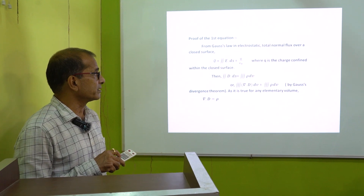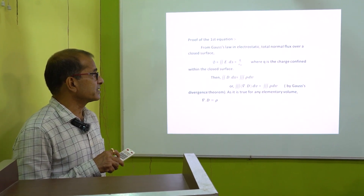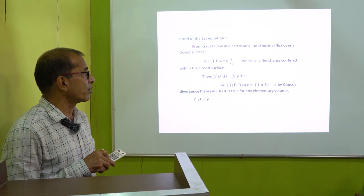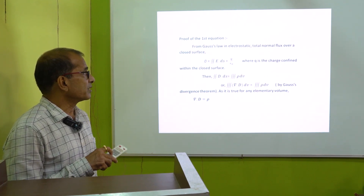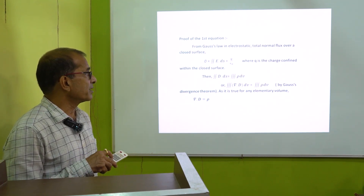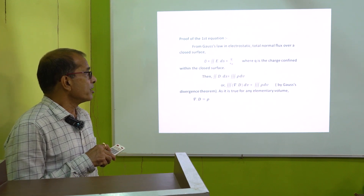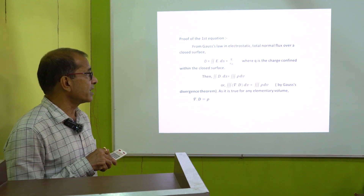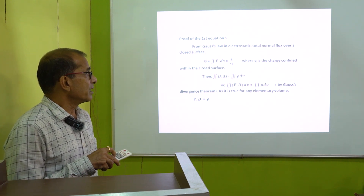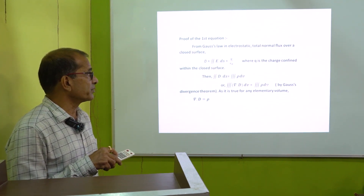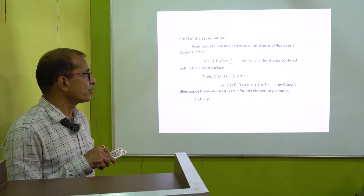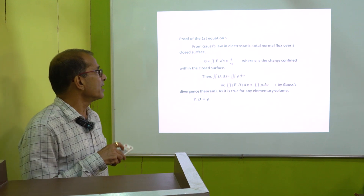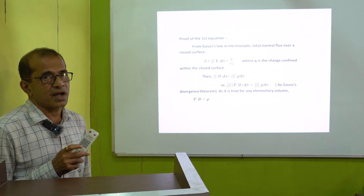Here we have taken the volume integration. Rho is the charge density, meaning charge per unit volume. Hence in volume dV, total amount of charge is ρ dV, which gives Q. From Gauss's divergence theorem, we have changed this surface integral to volume integral. As it is true for any elementary volume, divergence of D is equal to rho. This is the first equation of Maxwell.